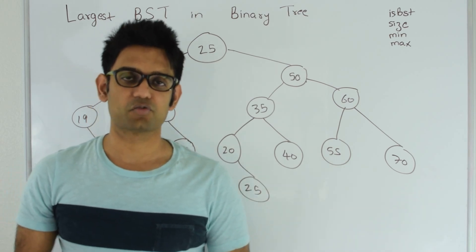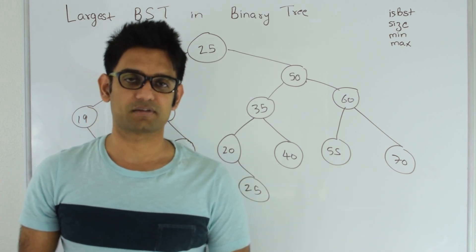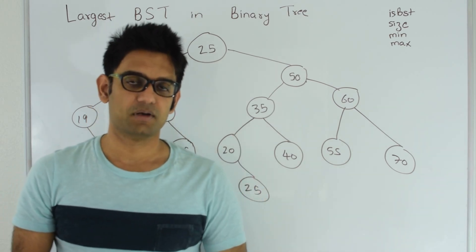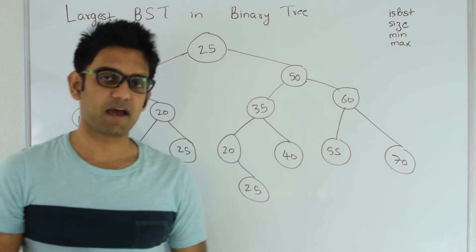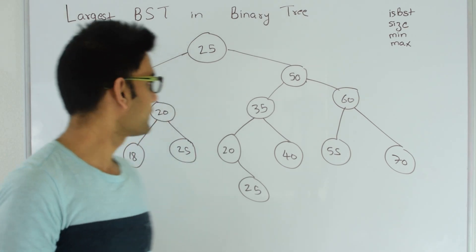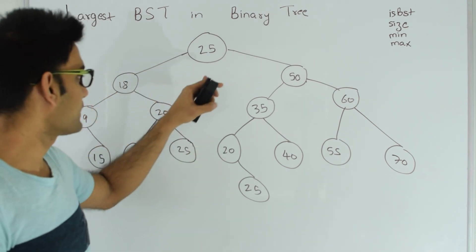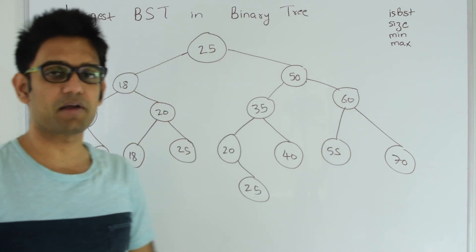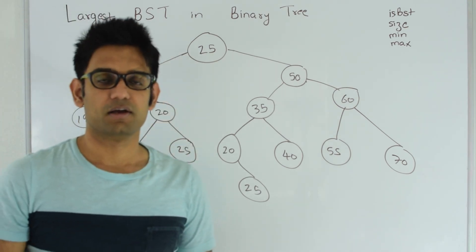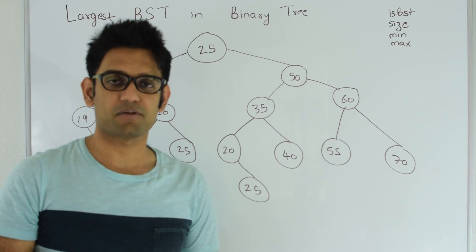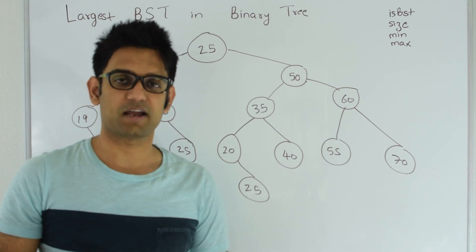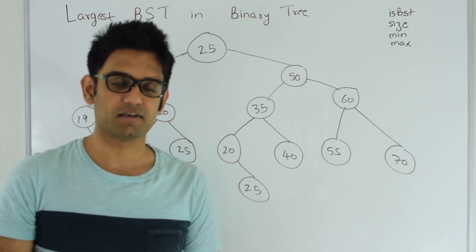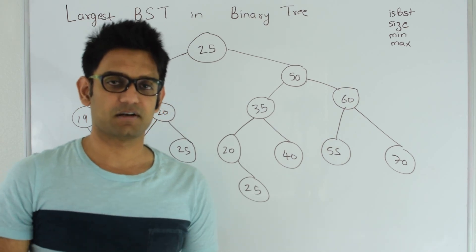This can be done in two ways. One is going from top to bottom. In that approach, what we do is we find: is the tree with this node as root a binary search tree or not? In another video we have already discussed that algorithm — how to find whether a given binary tree is a BST.